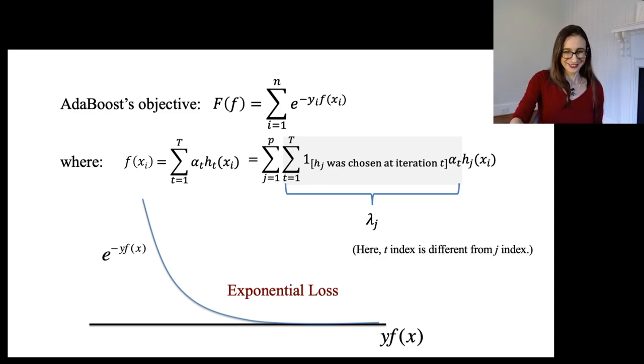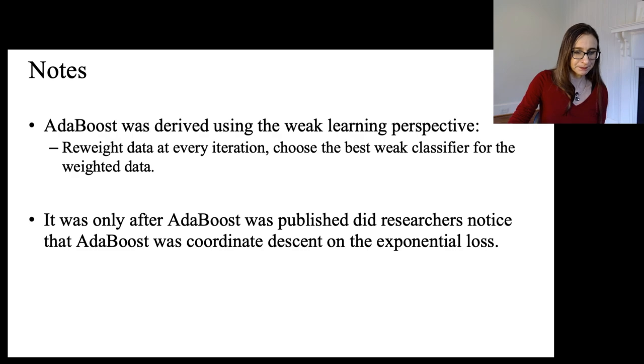T is different than J, I explained that already. So then you can write F of X as being this linear combination over all possible weak classifiers. And then lambda is the total weight that each weak classifier J gets in the final combined classifier.